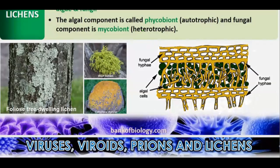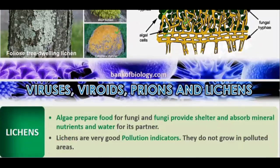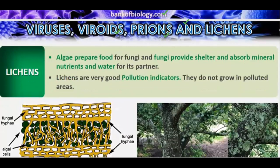Lichens are a symbiotic association between algae and a fungal partner. The fungal partner is called the mycobiont (heterotrophic) and the algal partner is called the phycobiont (autotrophic). The algae provide food for the fungi, and the fungi provide shelter and absorbed minerals for the algae. Lichens are very good pollution indicators — their presence indicates a non-polluted environment.